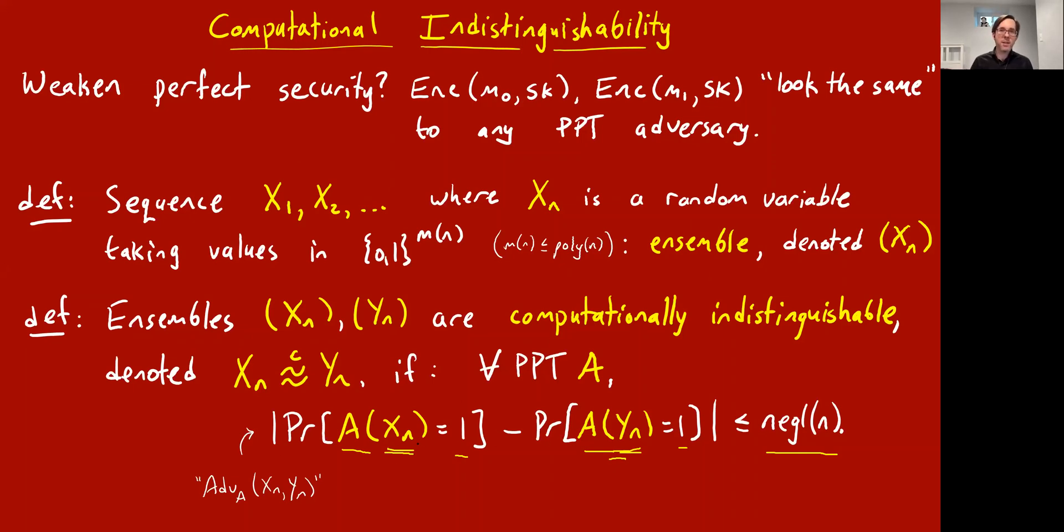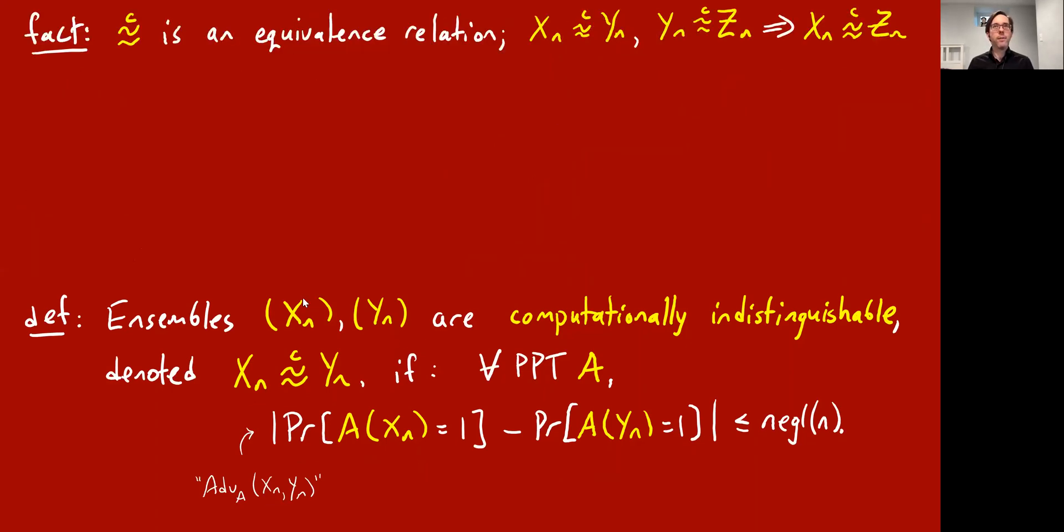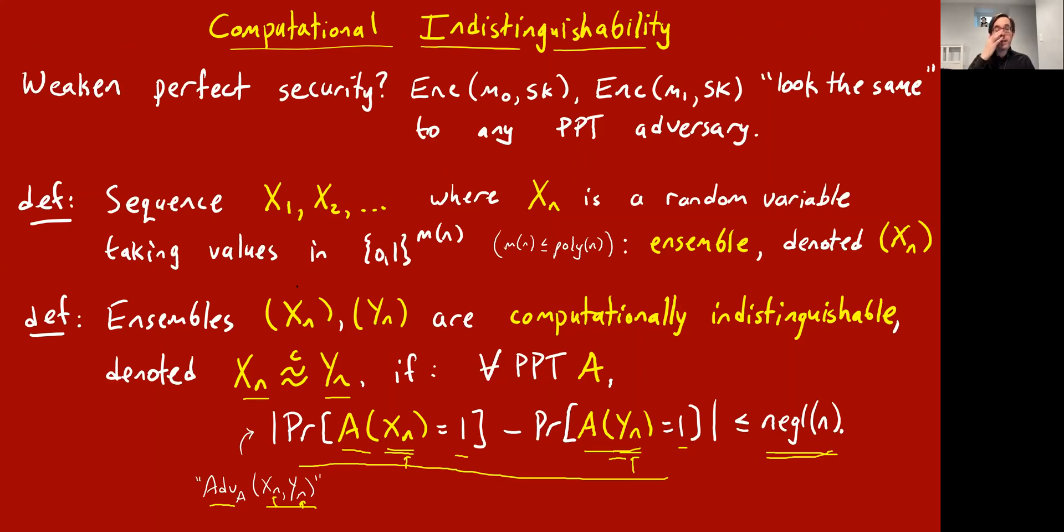And if they're both extremely close, if they're like 0.6 and 0.600001, it's basically saying that the adversary A cannot really tell the difference between the random variables X and the random variables Y. Okay, so we say that two ensembles, Xn and Yn, are computationally indistinguishable, and the notation is this curly equal sign with a C above it. If this holds, for all polynomial time algorithms A, this difference in probabilities is at most some negligible function of N. This difference is called the advantage A has on ensembles Xn and Yn, the advantage in distinguishing them. Okay, I hope that makes sense. If you have any questions, please ask.